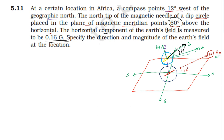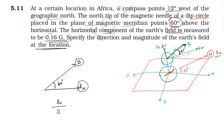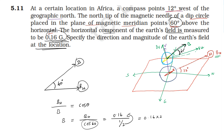For the magnetic field calculation: BH divided by B equals cos theta, where theta is the dip angle of 60 degrees. Therefore, B equals BH divided by cos 60°. Since cos 60° equals one-half, B equals 0.16 multiplied by 2, which gives 0.32 Gauss. The magnetic field at the location is 0.32 Gauss, directed 12 degrees west of geographic north and 60 degrees below the horizontal.